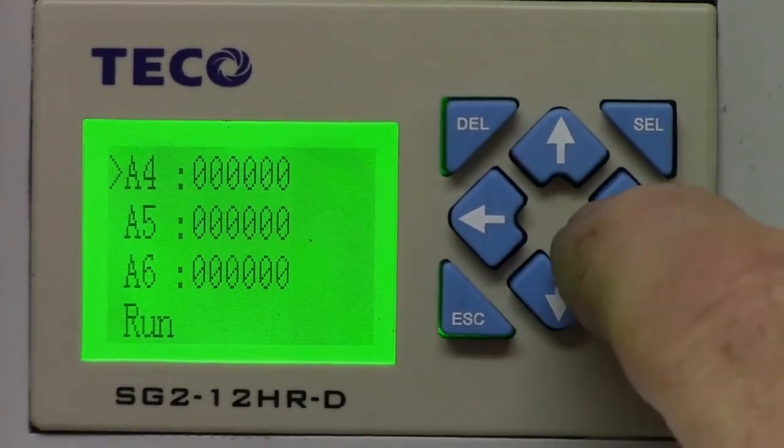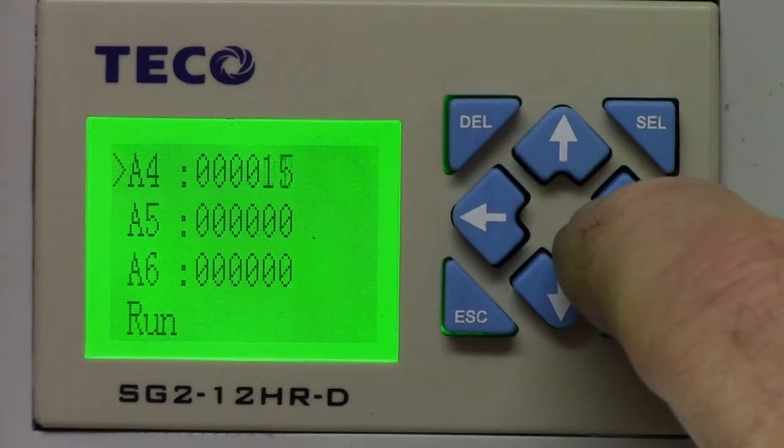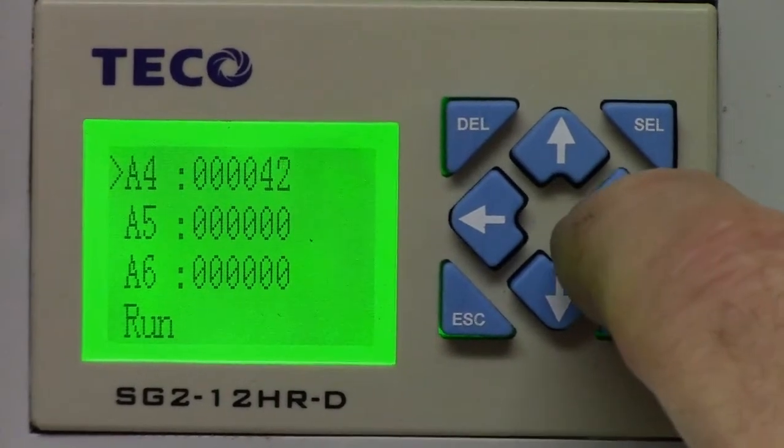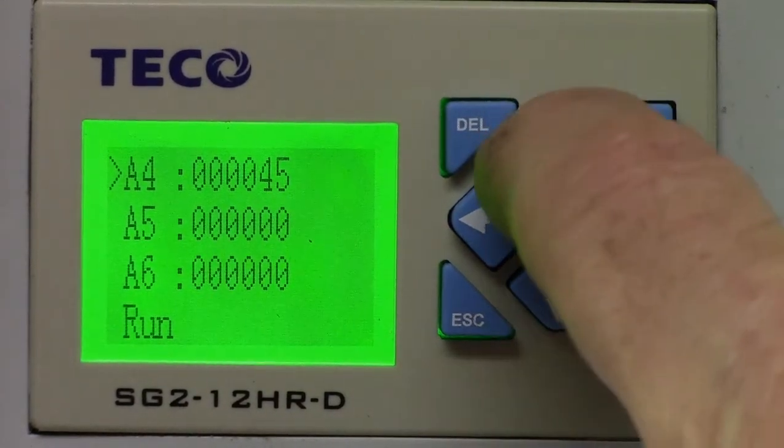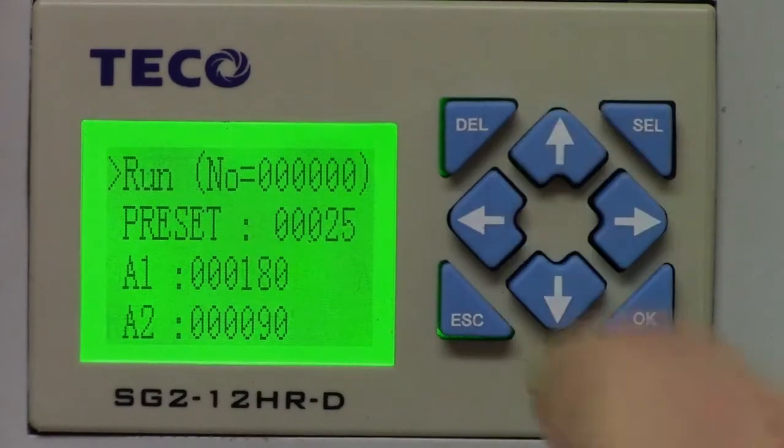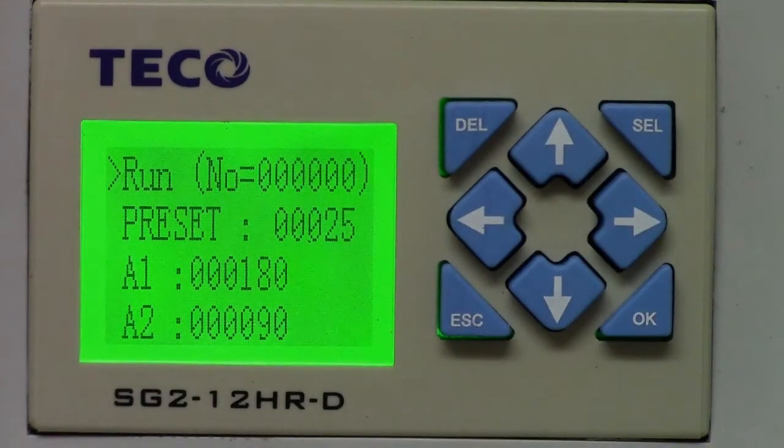And 45 in A4. Lastly, press the up arrow to put the controller back into run mode. Close the door on the controller and hang it back on the side of the machine.